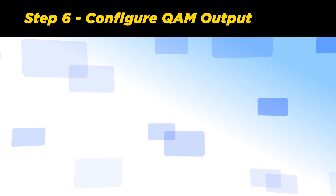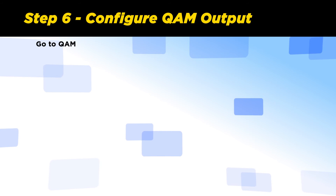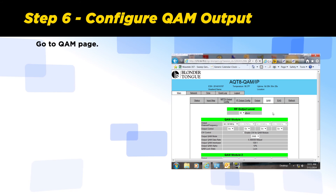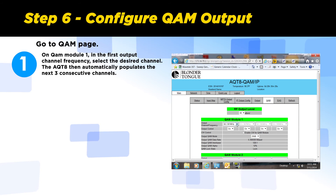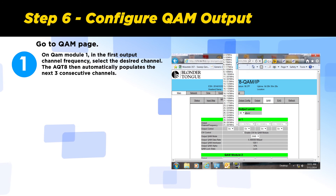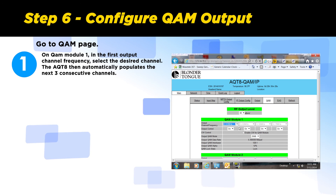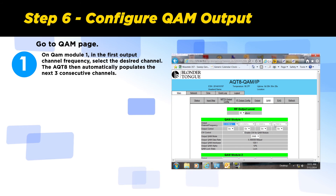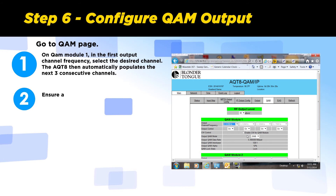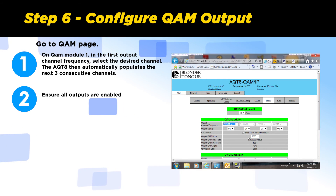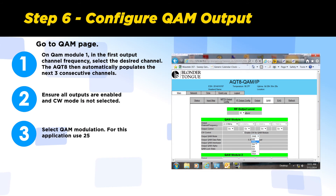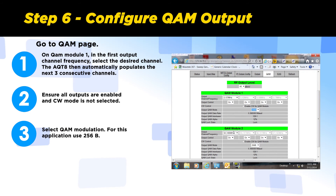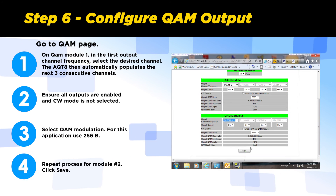Step 6: Configure QAM outputs. Go to the QAM page to set output channels. On QAM module 1, in the first output channel frequency field, select the desired channel. The AQT8 will then automatically populate the next three consecutive channels. Ensure that all outputs are enabled and that CW mode is not selected. Select the QAM modulation — for this application we will use 256B. Repeat the process for module 2, then click Save.